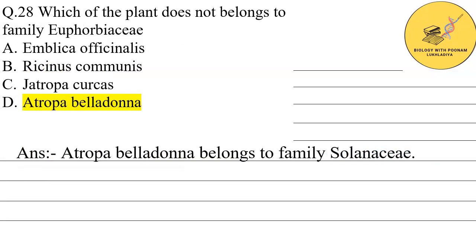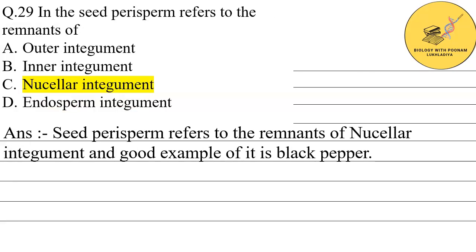The next question is: which plant doesn't belong to family Euphorbiaceae? In the options, the first three examples belong to Euphorbiaceae, and only the fourth one, D, Atropa belladonna, belongs to family Solanaceae. So the answer is Solanaceae.